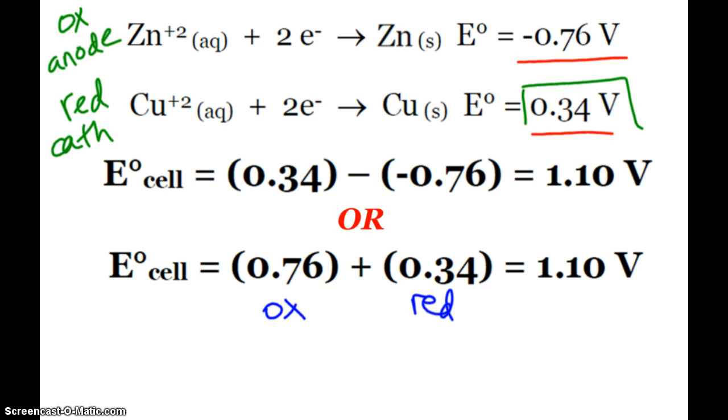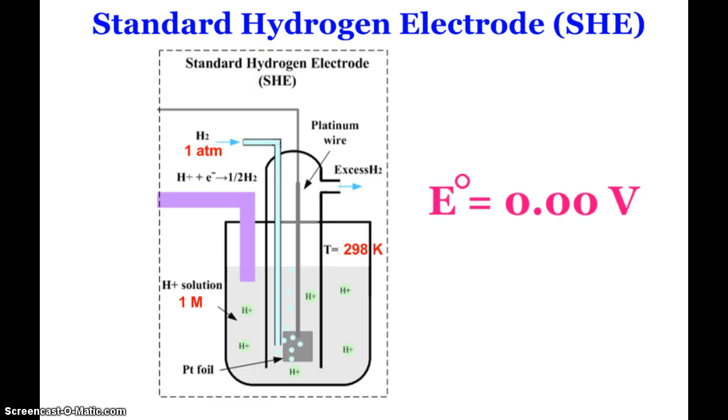Now remember that these all had to have been measured. You can't measure just a single reduction potential. They're all relative to one another. When you hook up the cells, you get a reading. Somewhere along the line, we had to say we need a standard. That standard is the hydrogen electrode, often abbreviated SHE. You can see the standard hydrogen electrode with 1 atmosphere of pressure, 1 molar of an acidic solution, temperature at 298. We said that this reduction potential is going to be 0 volts.